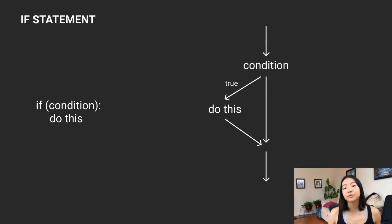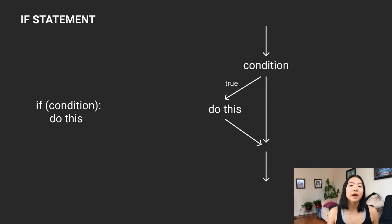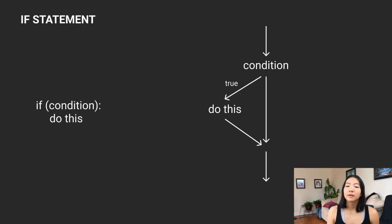If we use a flowchart to express this, basically you evaluate the expression, and if it's true then you do this. If it's not, then you just keep going.